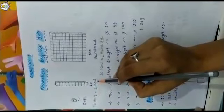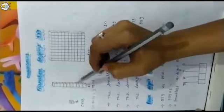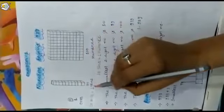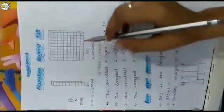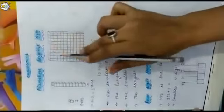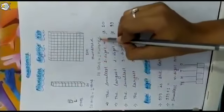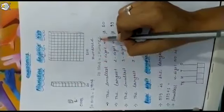In this tens strip we are having 10 small blocks, so it is called tens. Next, here we are having 100 small blocks and 10 strips of tens. When we group 10 tens together, we will get 100.